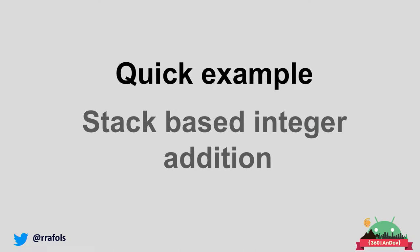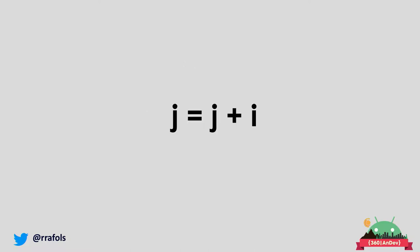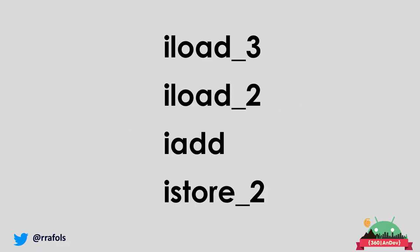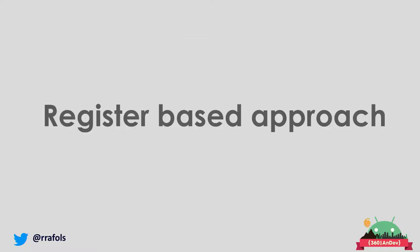Because Java doesn't know anything about the machine it's going to run on, all Java operations are basically stack-based. It's very easy to interpret even for low-end machines, but from a performance point of view it's not the best solution. Let's do a quick example: a simple addition where J and I are integers. In Java bytecode it will be: load one variable onto the stack, load the other one, add them, and store the result in J.